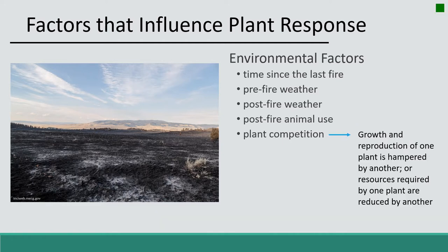The last environmental factor influencing plant responses to fire is plant competition — when plants use the same resource, one outcompetes the other. This depends on the timing and rate of germination and growth, water and nutrient requirements. Cheatgrass, as a winter annual, germinates sooner than native plants, giving it a competitive edge by using resources first. All these factors — germination timing, growth rate, and resource requirements — influence plant response to fire.